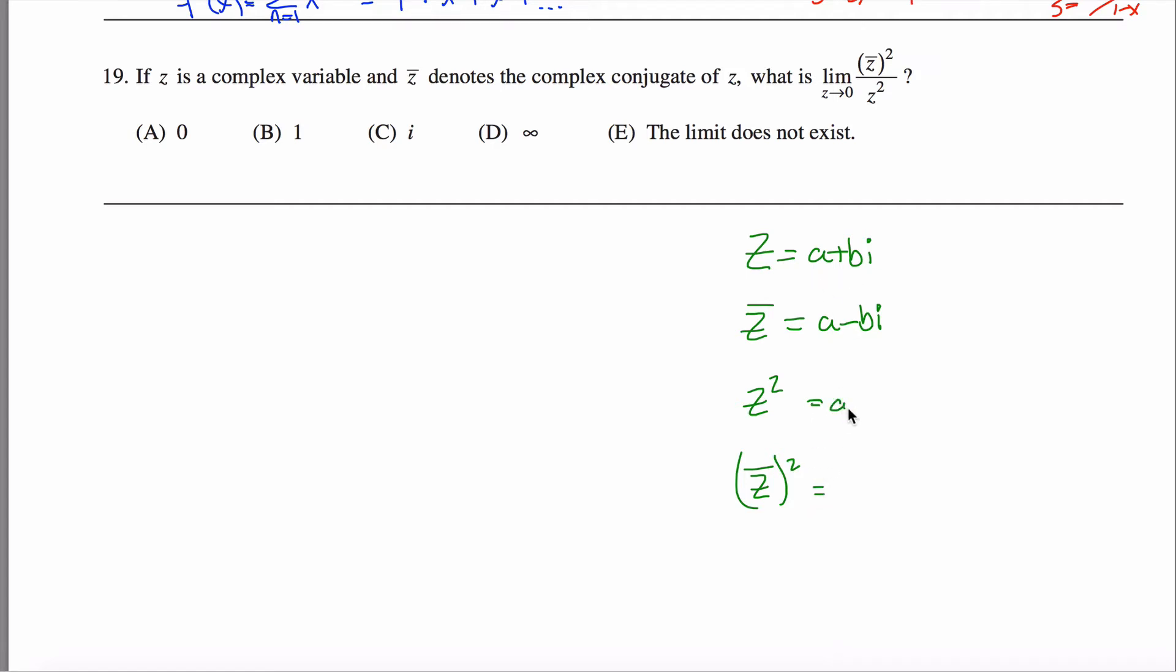So this thing squared, I get a squared plus 2abi plus b squared i squared, a.k.a. a squared minus b squared plus 2abi. Here's the real part. There's the imaginary part.